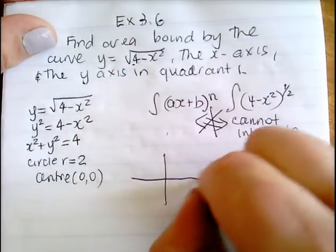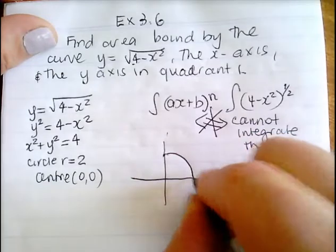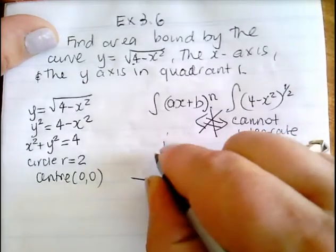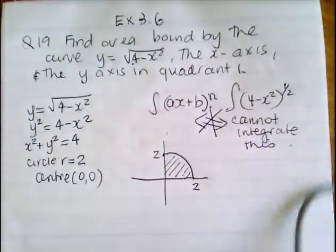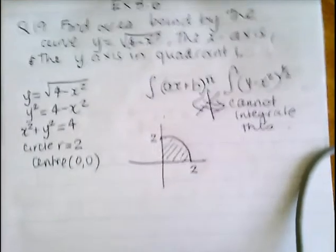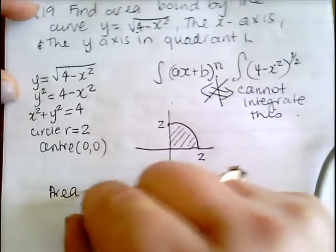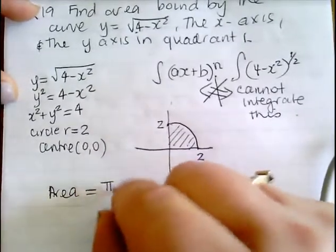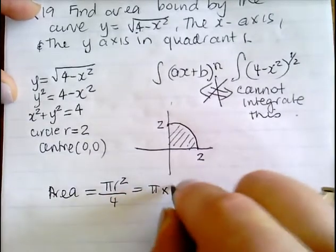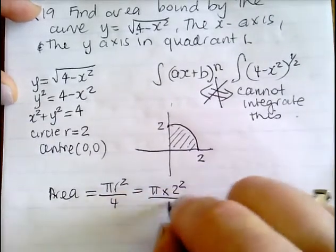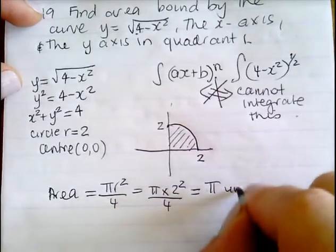Therefore, what you've got is a circle with center (0,0) and radius 2, and you just want it in the first quadrant. So the area is πr²/4, which is π times 2 squared on 4 — that's just π units squared.